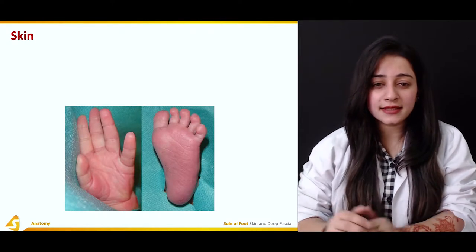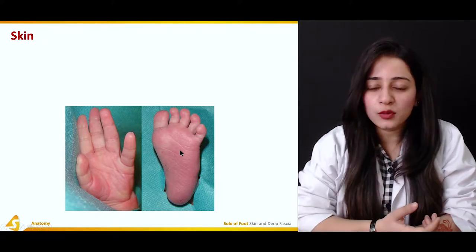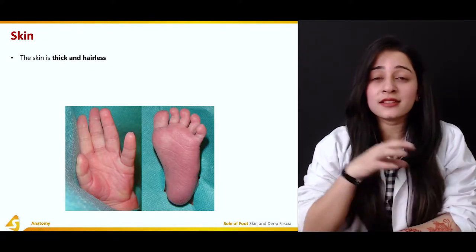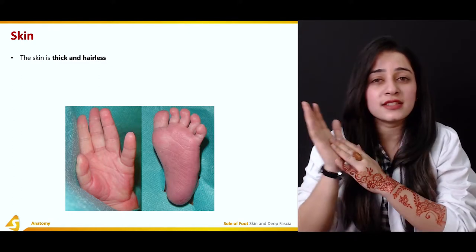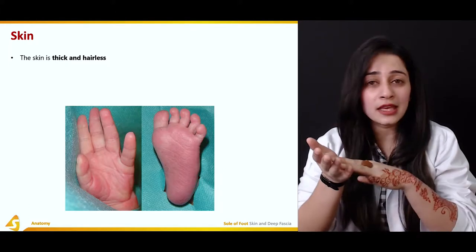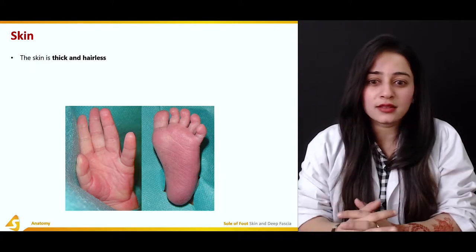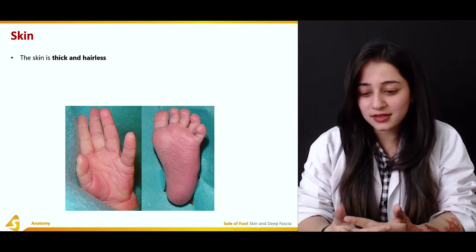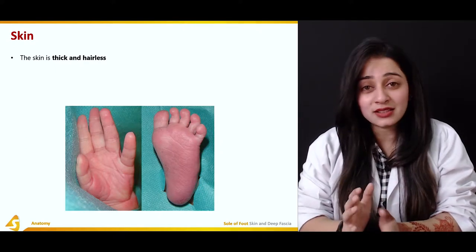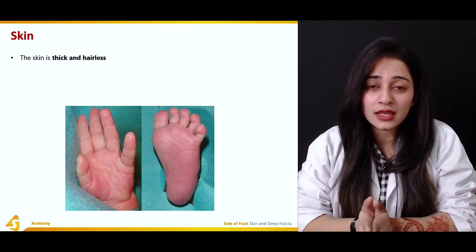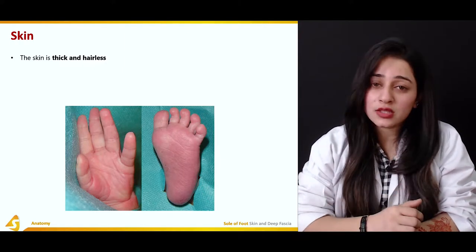This is the skin of the sole — this is the sole of a small baby, you can see here. An important characteristic of the skin of the sole, just like the skin of the hand, is that we don't have hair — no hairs grow on the sole. These are areas where no hairs grow, and the skin here is basically thick skin as compared to the skin present on other structures of the body.